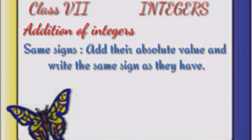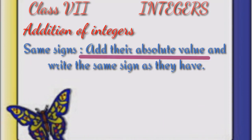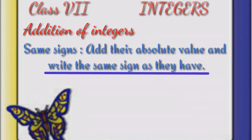When we add integers, we see their sign. If they have the same sign, we will add their absolute value — meaning we will ignore the sign and add the numbers — and write the same sign as they have.